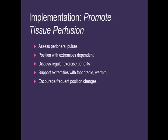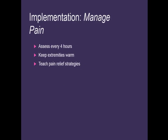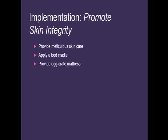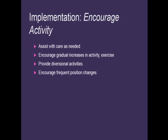For promoting tissue perfusion: position extremities in a dependent position, discuss regular exercise, support extremities with foot cradles, and encourage frequent position changes. For pain management: assess pain every four hours, keep the extremities warm, and teach patients different strategies to relieve discomfort. For skin integrity: provide very meticulous skin care, know the difference between a stasis ulcer and a decubitus — stasis ulcers do not occur over bony prominences. Use egg crate mattresses or specialized air mattresses to promote skin integrity. For activity: assist where needed but encourage as much activity as possible, provide distracting activities, and encourage frequent position changes.